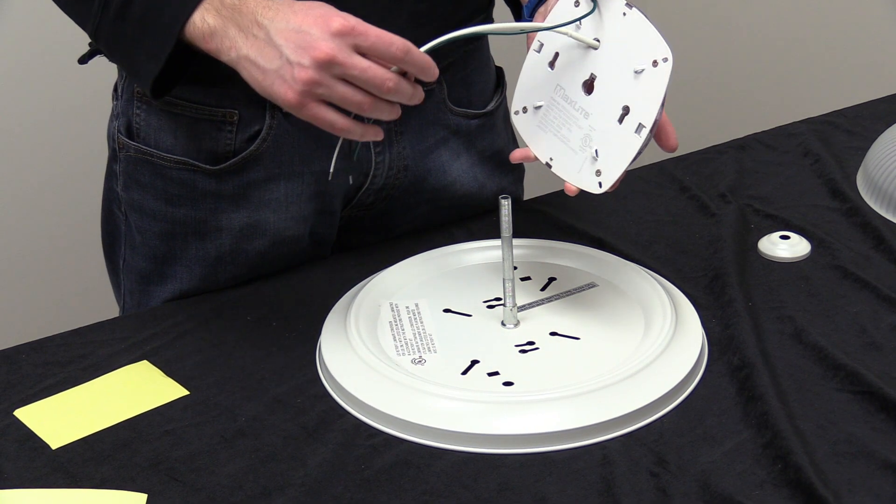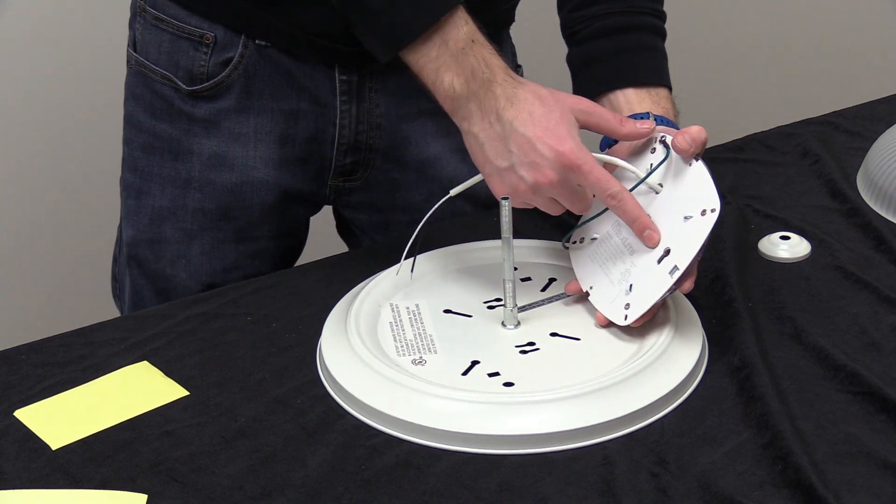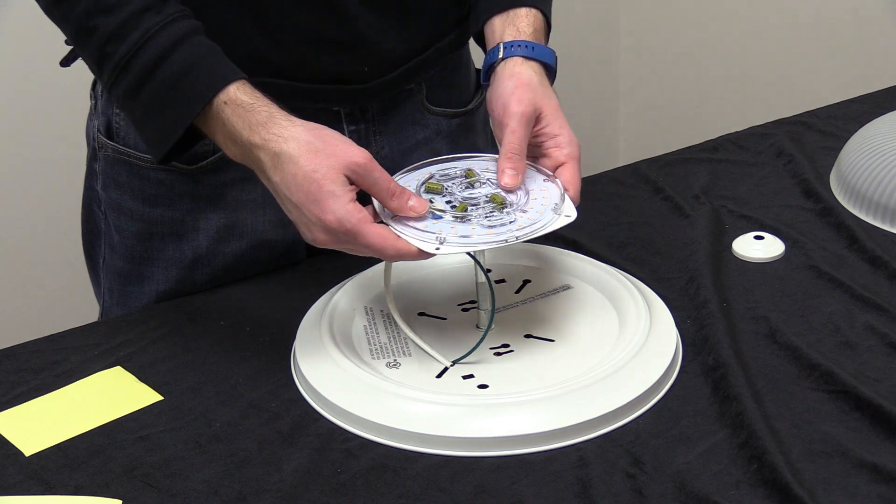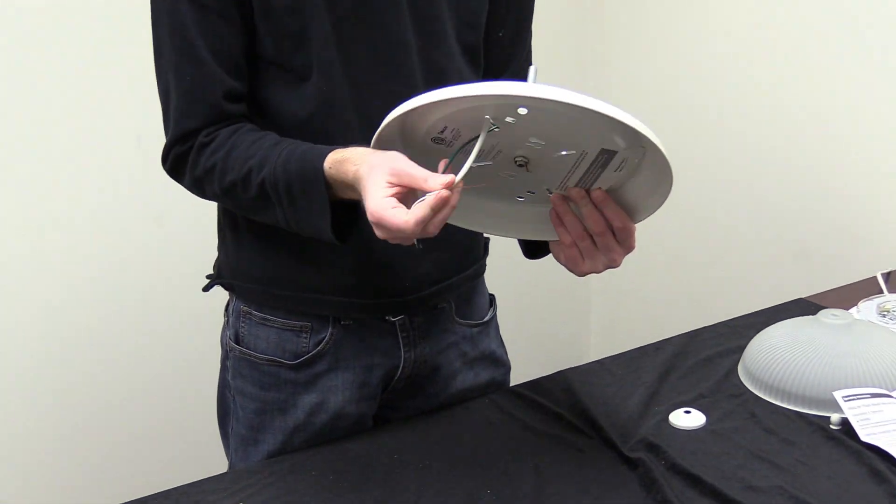Now, we'll route the LED retrofit kit wire harness wires through the wire opening in the fixture. Make sure the wires will not be pinched when the fixture hardware is reassembled.